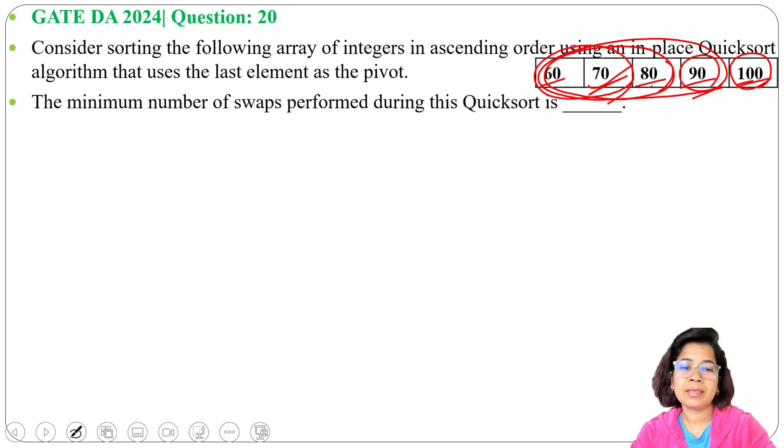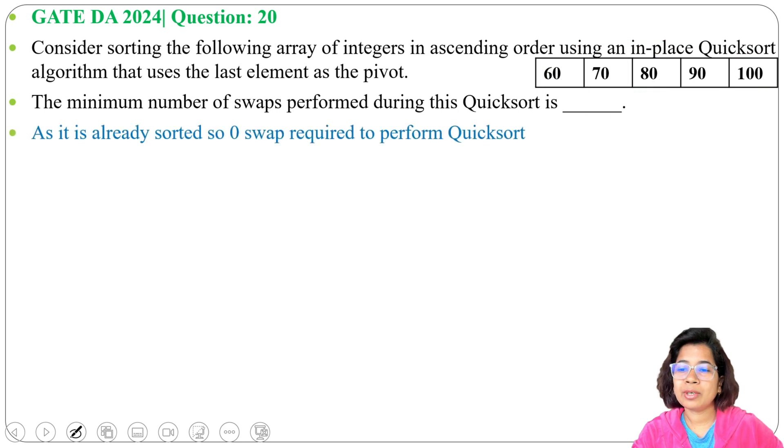Now 70 is in place and 60 is also in place. As this is already in sorted order, we don't need a single swap. So the answer will be zero. We don't need any swap as it is already in sorted order.